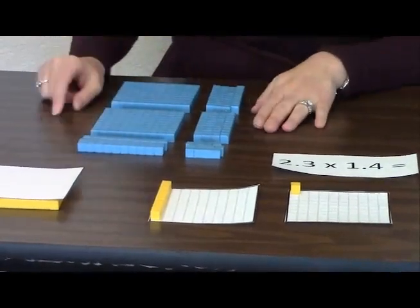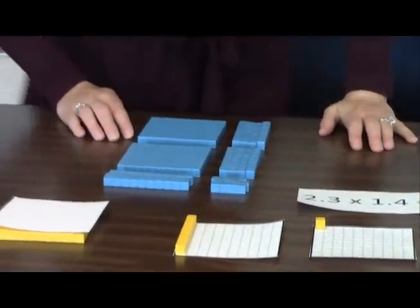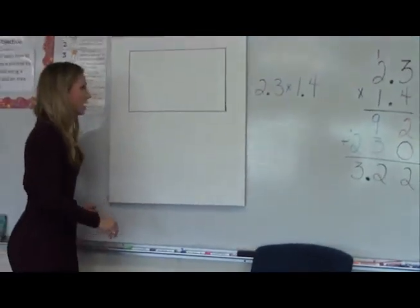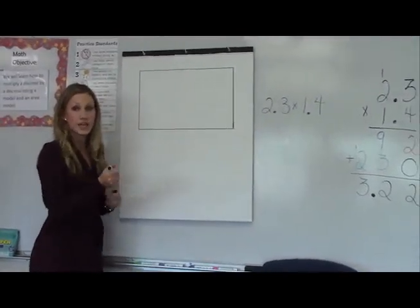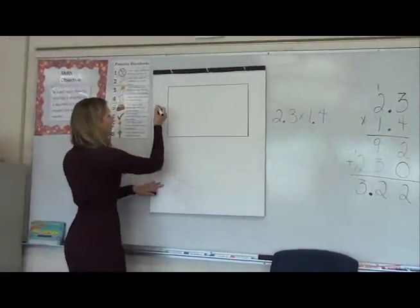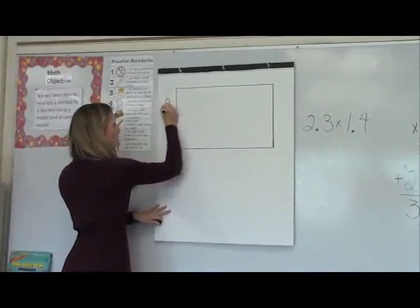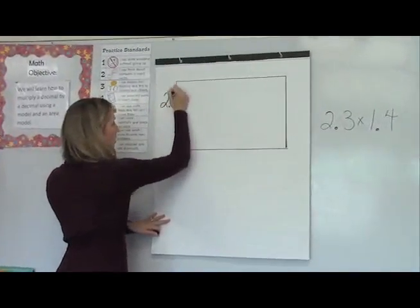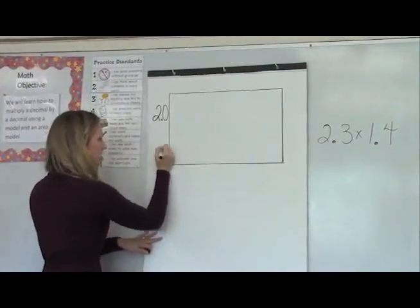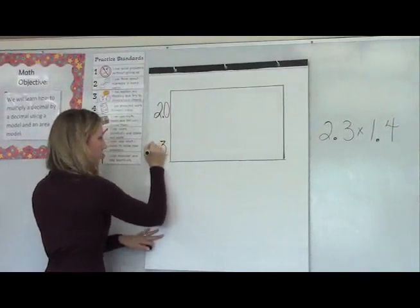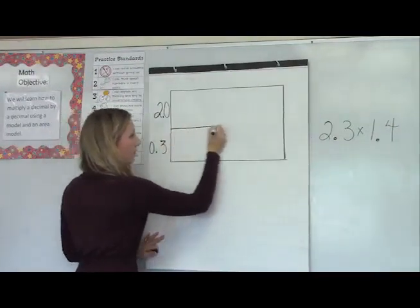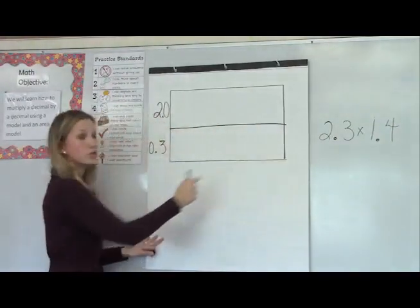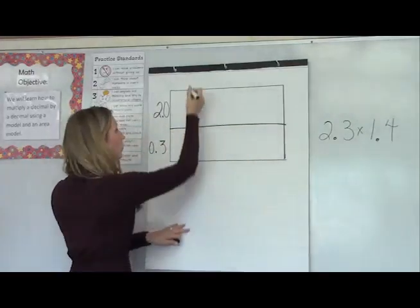I want to relate this to an open array model. So, I'm going to take the same problem, and I'm going to write two and three tenths in expanded form. So I would have two wholes and three tenths. I would also have one whole and four tenths.